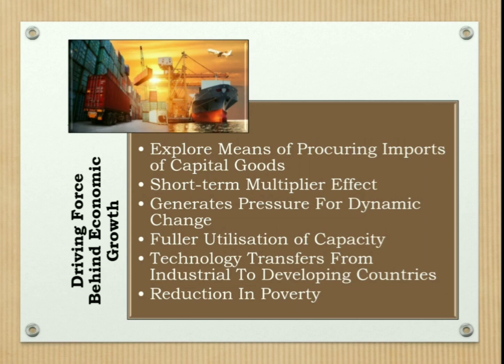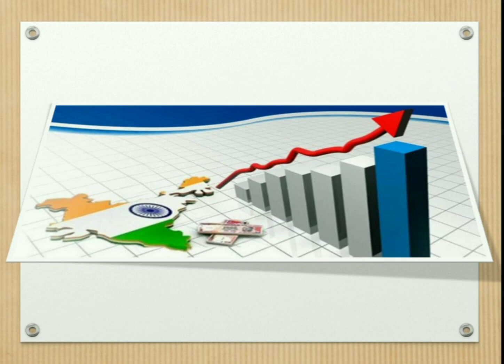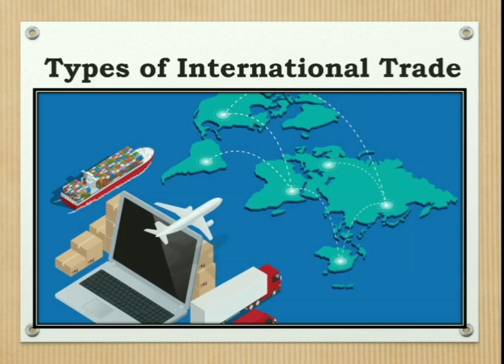Foreign trade generates a pressure for dynamic change through competitive pressure from imports, pressure of competing export markets, and better allocation of resources. Exports allow fuller utilization of capacity, resulting in achievement of economies of scale. Foreign trade increases technology transfers from industrial to developing countries, resulting in demand for more skilled laborers. Increased openness to trade has also been strongly associated with the reduction in poverty in most developing countries.